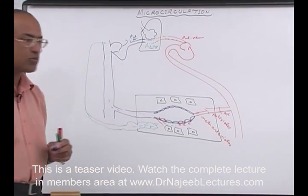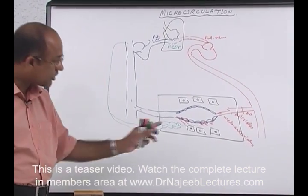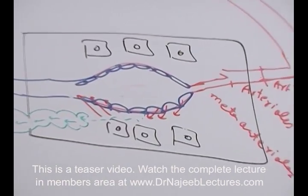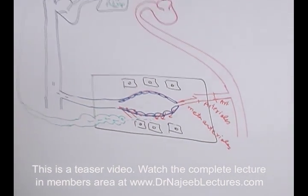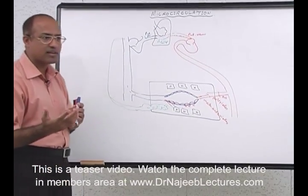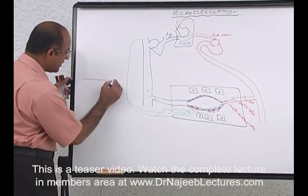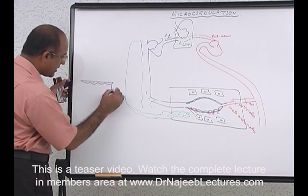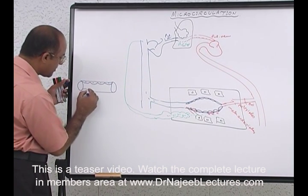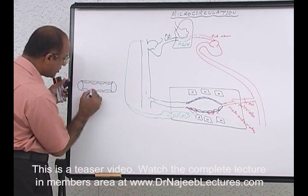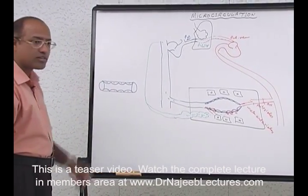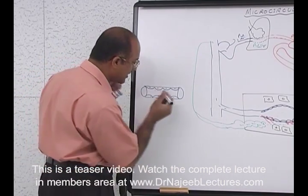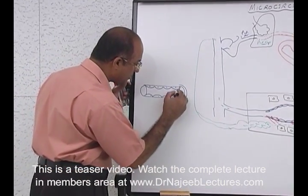In this diagram of microcirculation — the structure of capillaries — something is missing. What is the classic structure of a capillary from histology? These are endothelial cells on both sides, but something extremely important is missing: the basement membrane. So the basement membrane is around the endothelial cells.